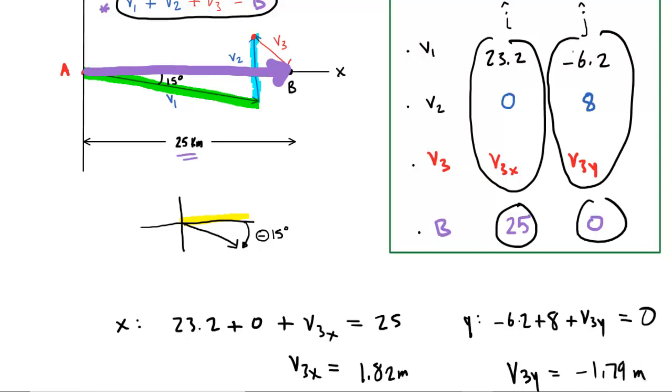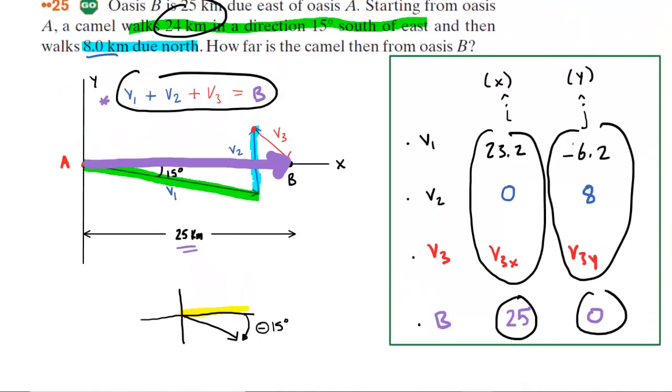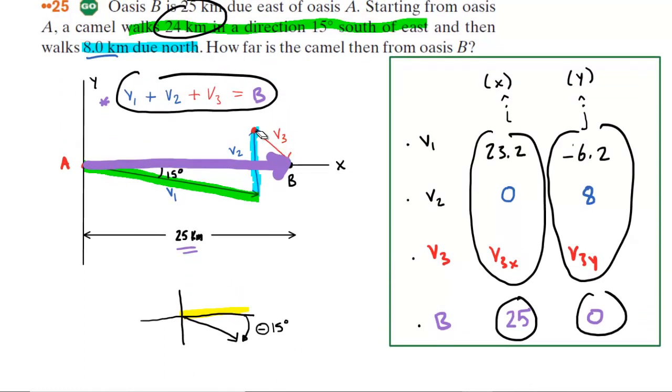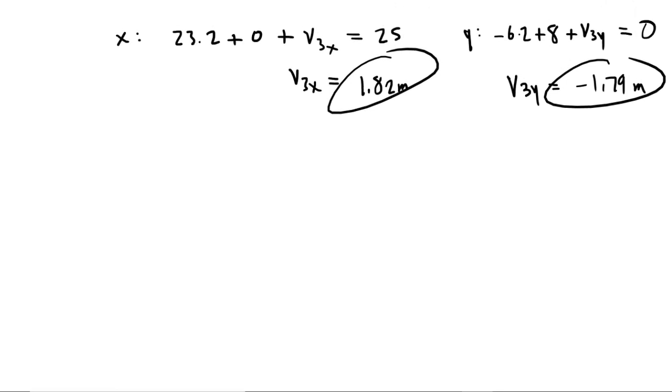So those are the X and the Y components right here and here of that vector that we labeled V3 in the diagram. So that's this vector right here. Now we don't want the individual X and Y components of that vector. We want the actual length of that vector. But that's pretty easy now that we have the X and Y components. Consider one final drawing here. What we can do is just draw an arbitrary X and Y axis. Now the X component of vector 3 is positive 1.82. So it would project along the positive X axis, 1.82 meters. The Y component is negative 1.79. So it would project along the negative Y axis. And what we're looking for is this length right here. This is basically the resultant of vector 3.